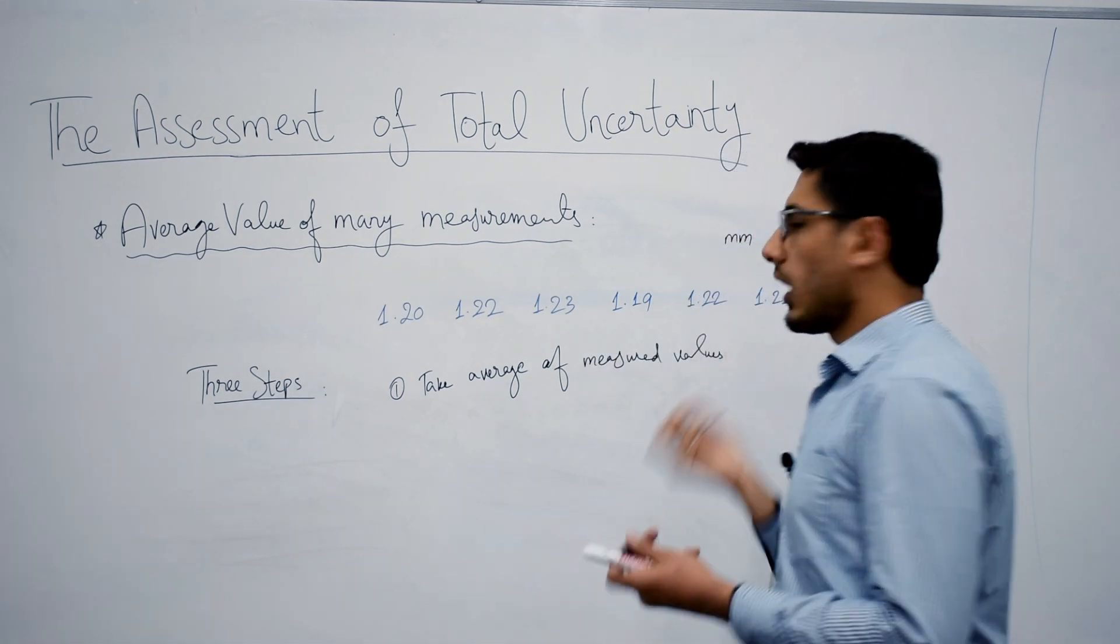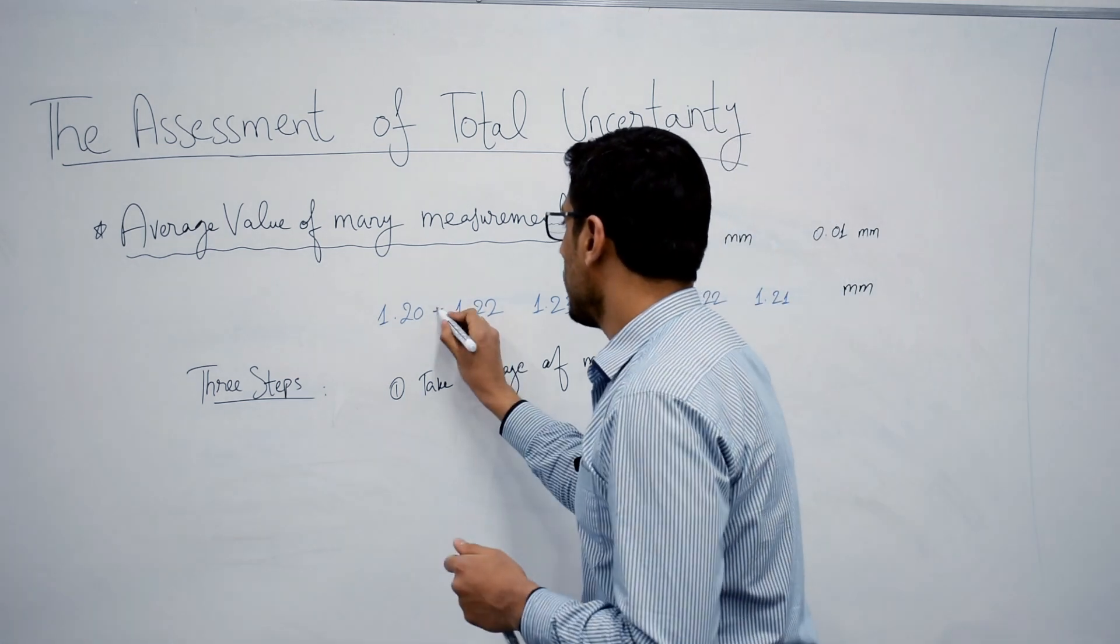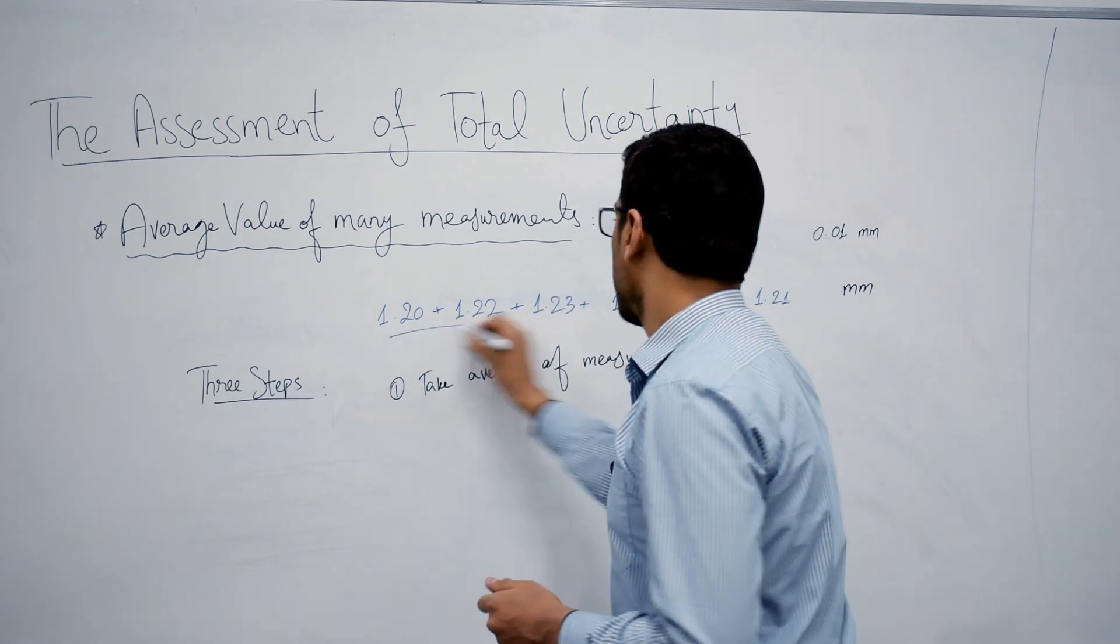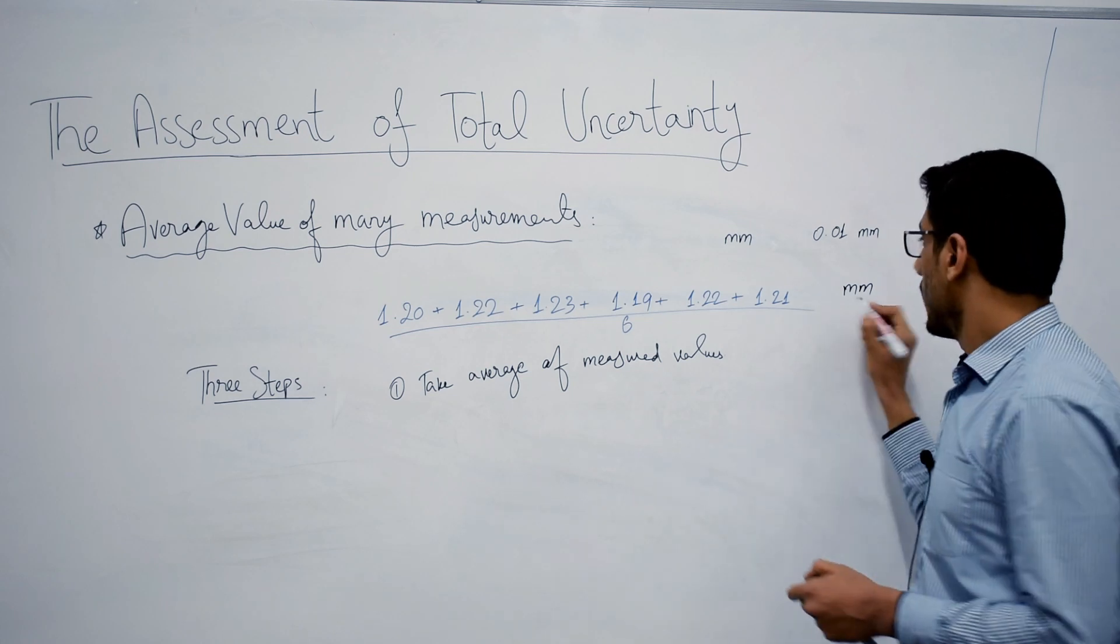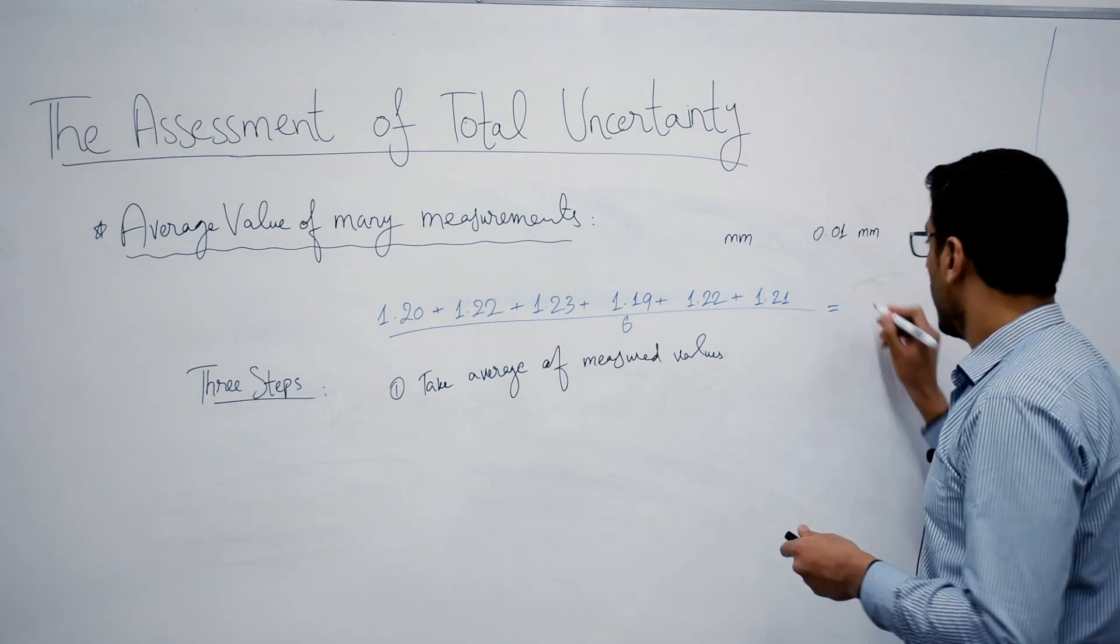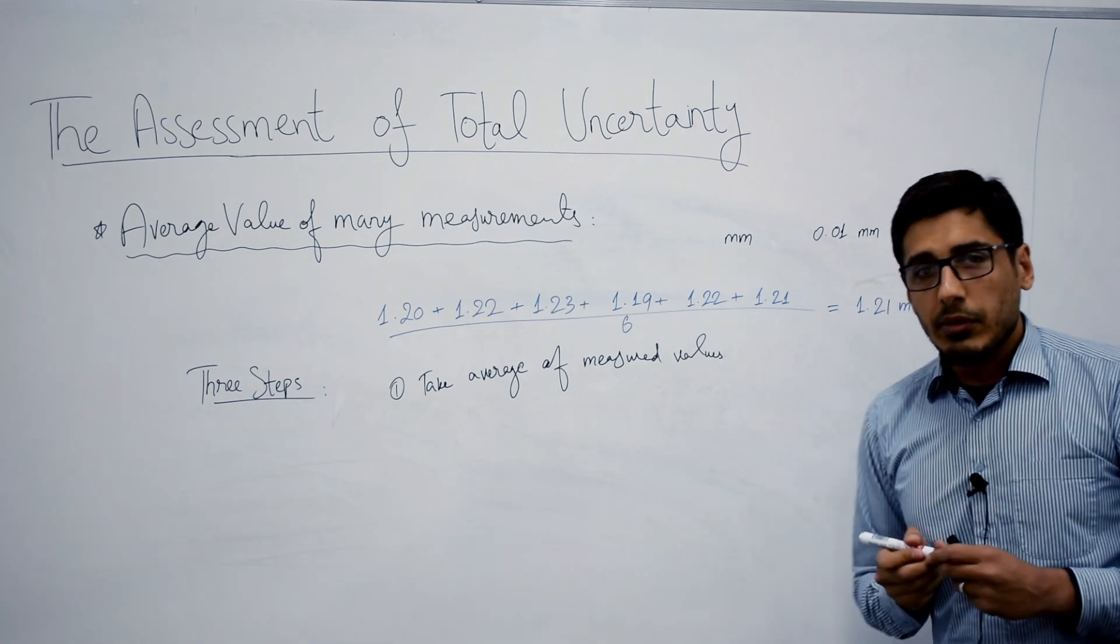How can you do that? Simply add all these measurements and divide by six, since these are six measurements. So the result that you are going to get as an average value is 1.21 millimeter.